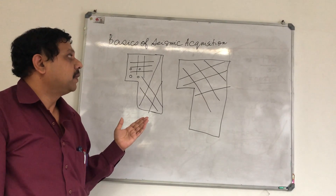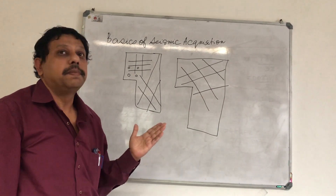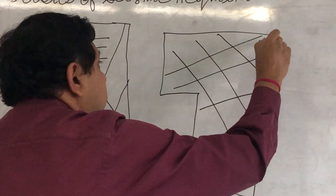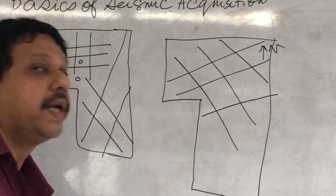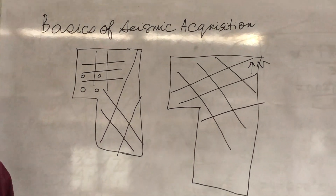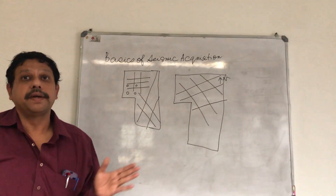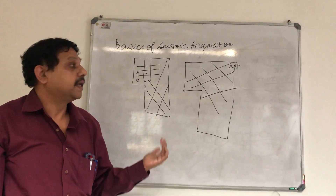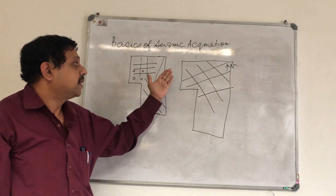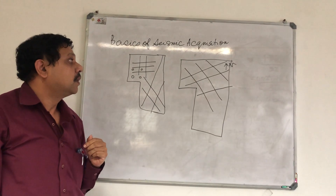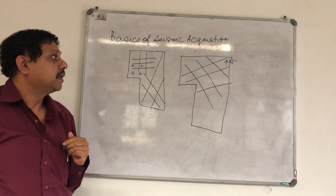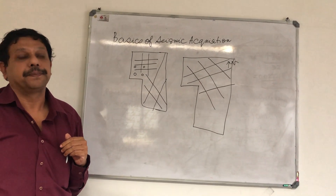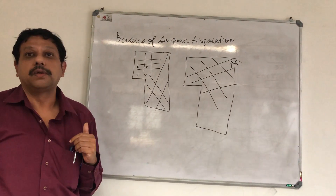When you do the 2D seismic, you should know the dip and strike of the block and which side is north. Based on the dip and strike, you will be orienting your lines. Based on the subsurface prospect orientation, you will orient your lines. In this case, we are seeing that there are certain lines oriented north-west to south-east, and there are certain lines oriented north-east to south-west, and they are orthogonal to each other.